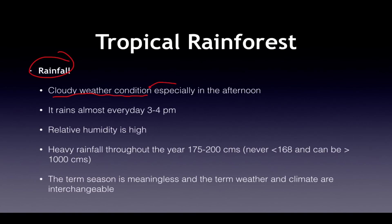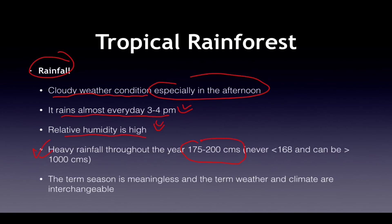Rainfall occurs almost every day — especially in the afternoon around 3–4 pm — so relative humidity is very high. High humidity, high temperature, high sunshine, proximity to equator, and low altitude all contribute to very high biodiversity. Annual rainfall is between 175–200 cm at minimum — never less than 168 cm — but can exceed 1000 cm in some places like Cherrapunji in Meghalaya.